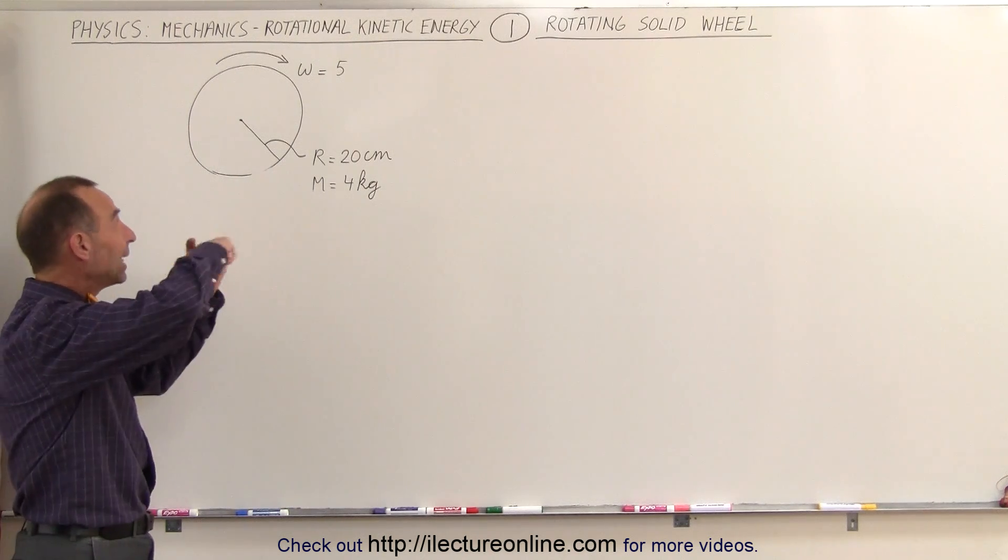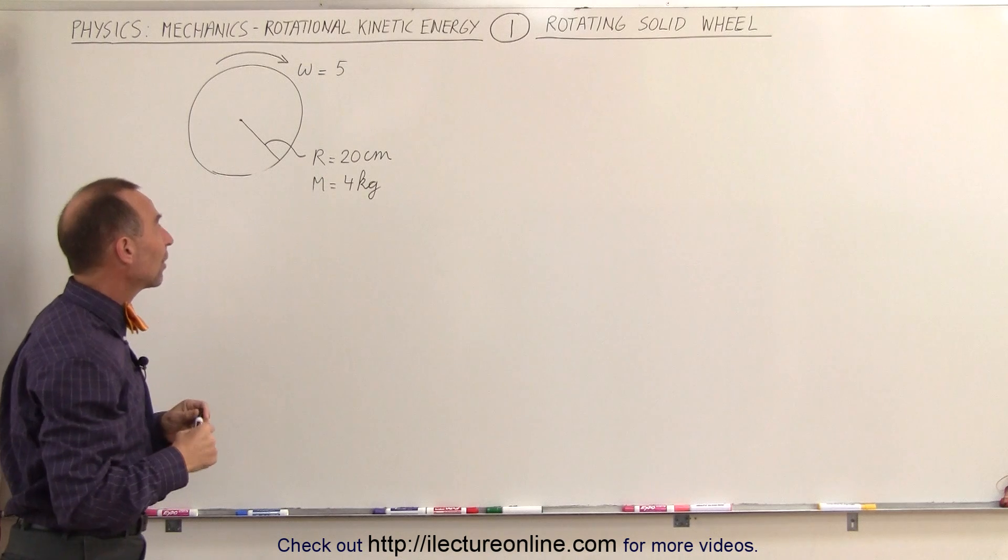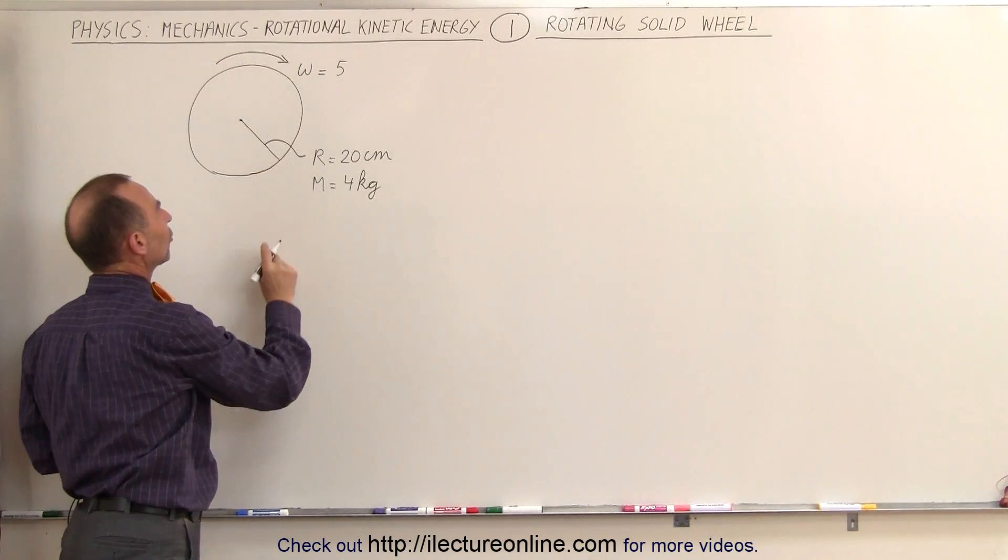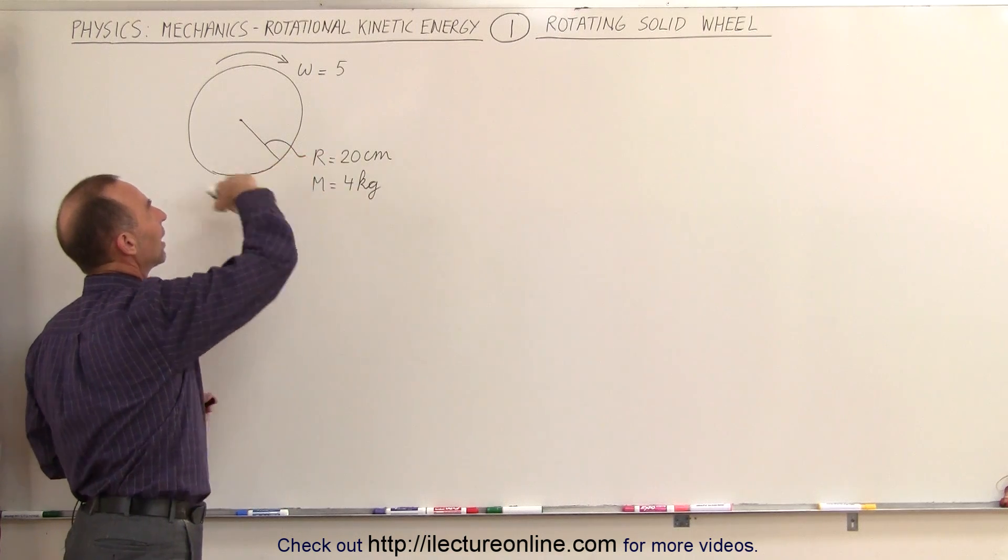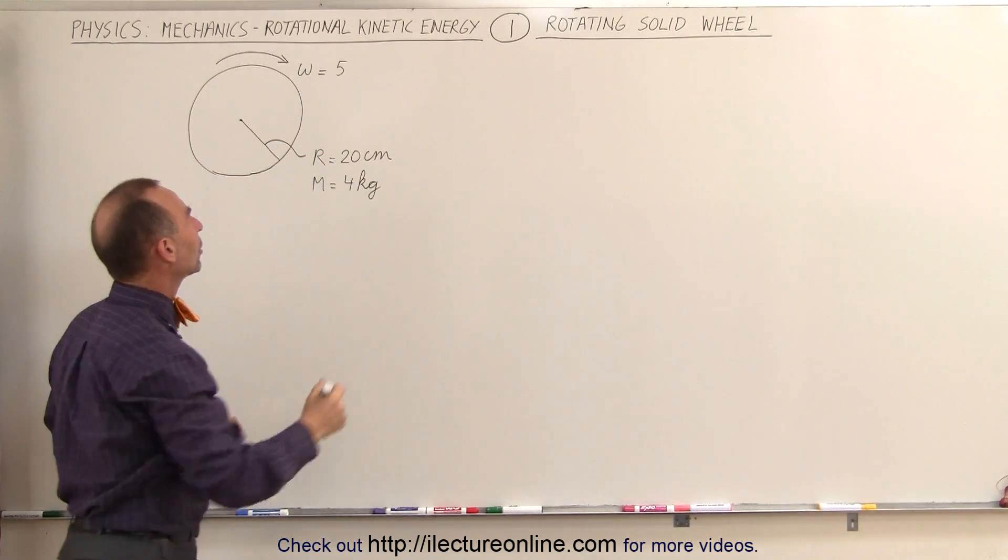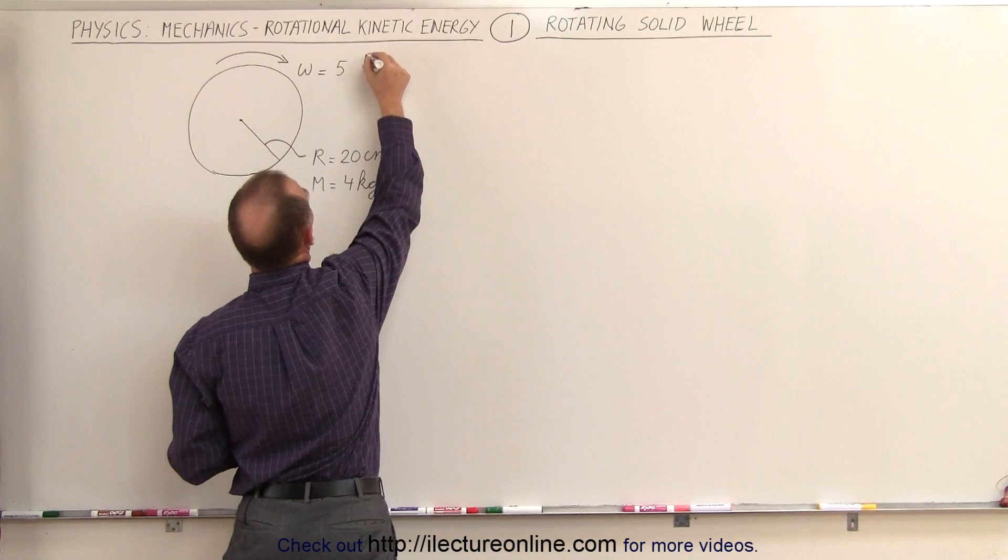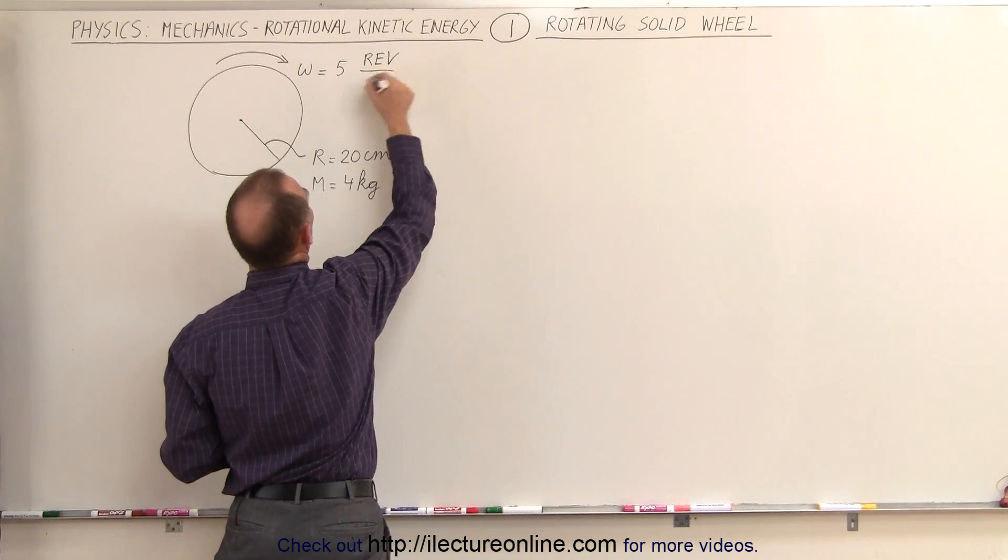Let's assume that it's rotating in place, it's not moving in any direction, and the dimensions on the wheel: the radius is 20 centimeters, the mass is 4 kilograms, and the angular rotation is equal to 5 revolutions per second.